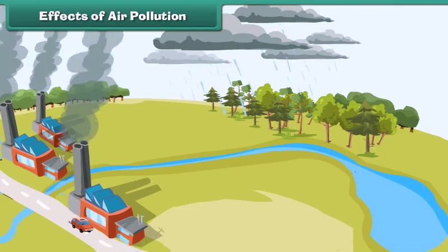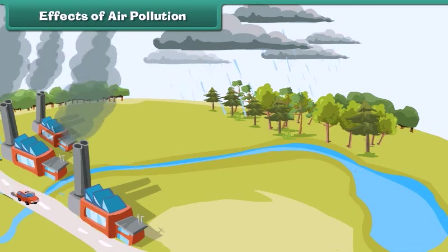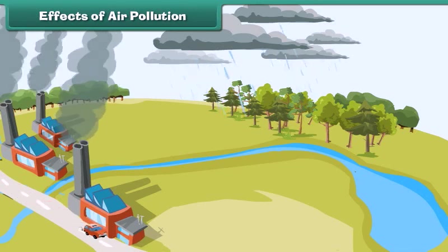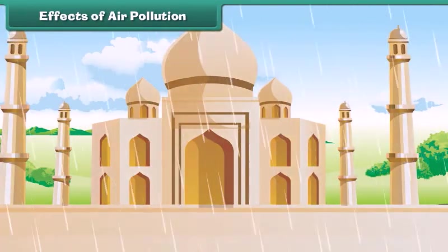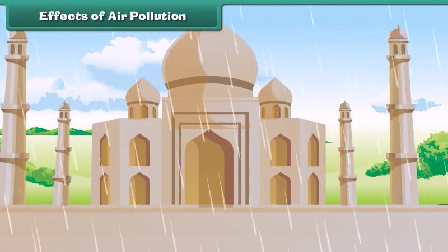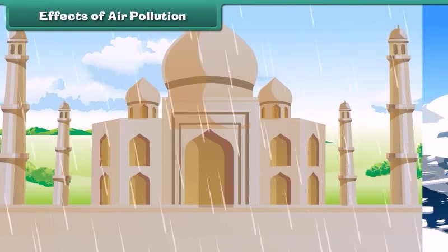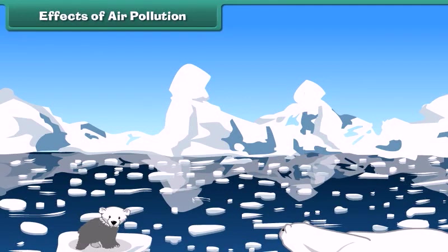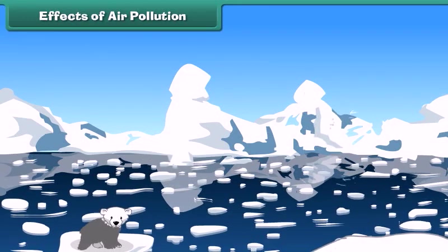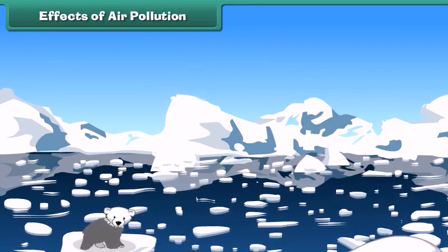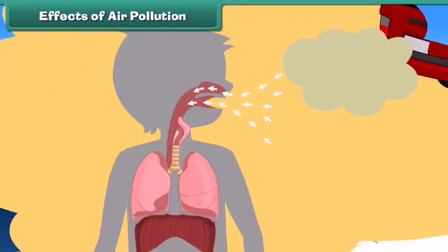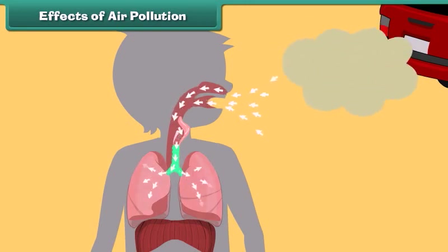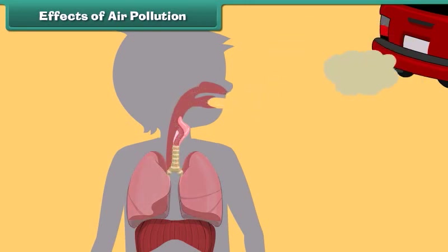This polluted air mixes with clouds in the atmosphere and brings harmful rain, also known as acid rain. Acid rain damages our buildings and monuments. Besides this, large amounts of carbon dioxide in the air increase global temperatures, which results in the melting of glaciers. It also adversely affects our lungs, and we suffer from respiratory disorders.